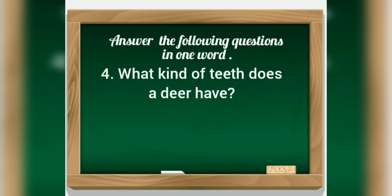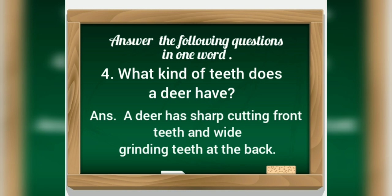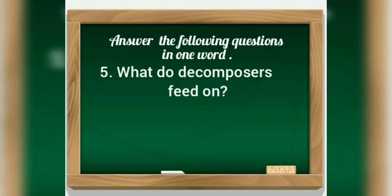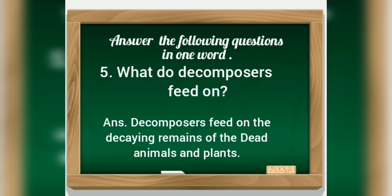Fourth, what kind of teeth does a deer have? Answer: A deer has sharp cutting front teeth and wide grinding teeth at the back. Fifth, what do decomposers feed on? Answer: Decomposers feed on the decaying remains of dead animals and plants.